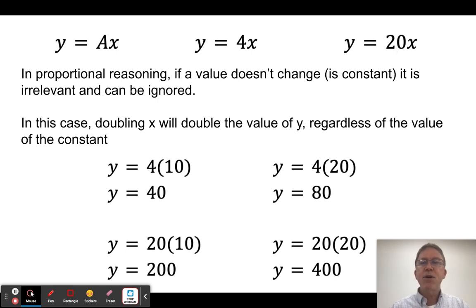However, if the question is, how does changing x affect the value of y? Well, look at this. Let's just say x had a value of 10. Well, okay, in this case, it's 40, right? If I was to double that, so instead of 10, I had 20, it goes up to 80. Look, doubling this one, doubled this one. But if that A value was 20 instead of four, I'd end up with 20 times 10 is 200. And if I doubled x to 20, I get 400, it's still doubled.